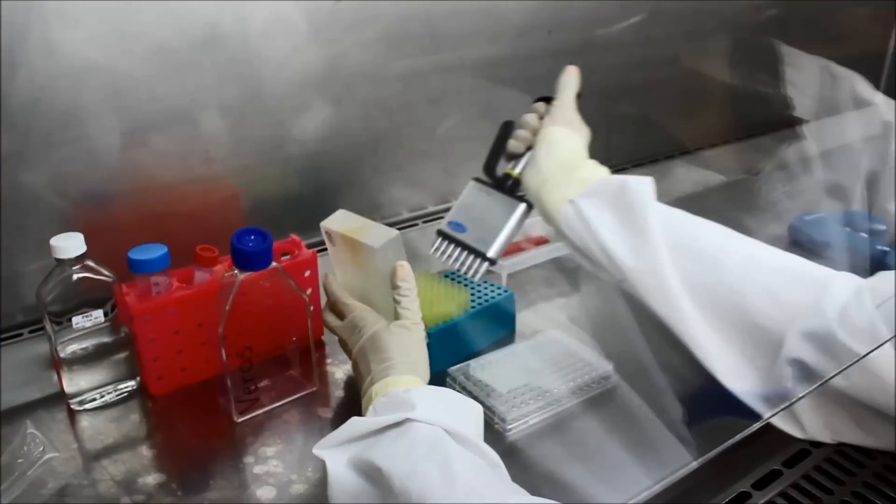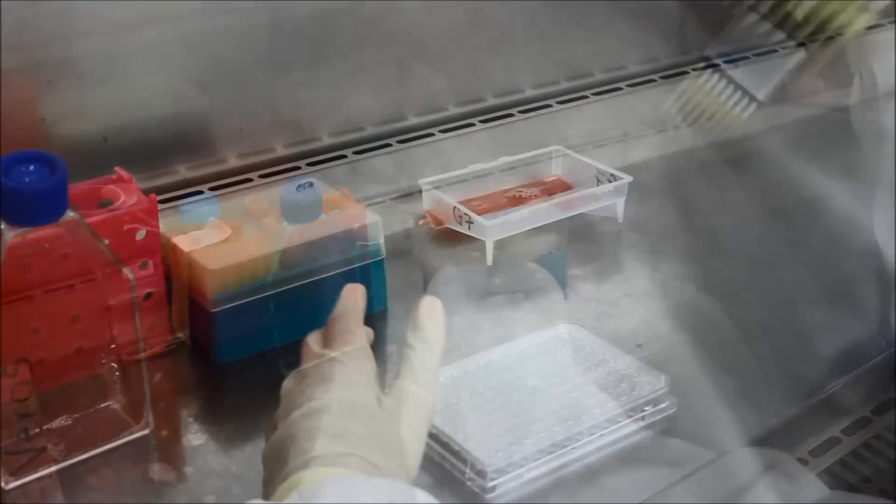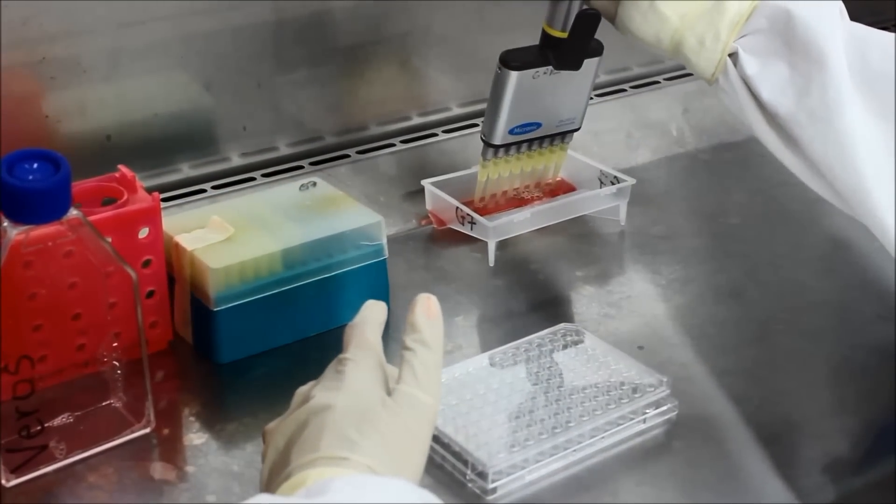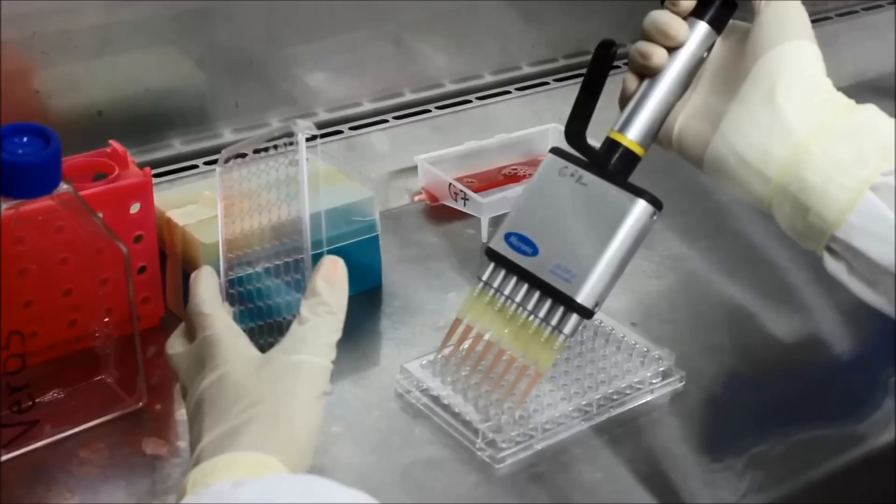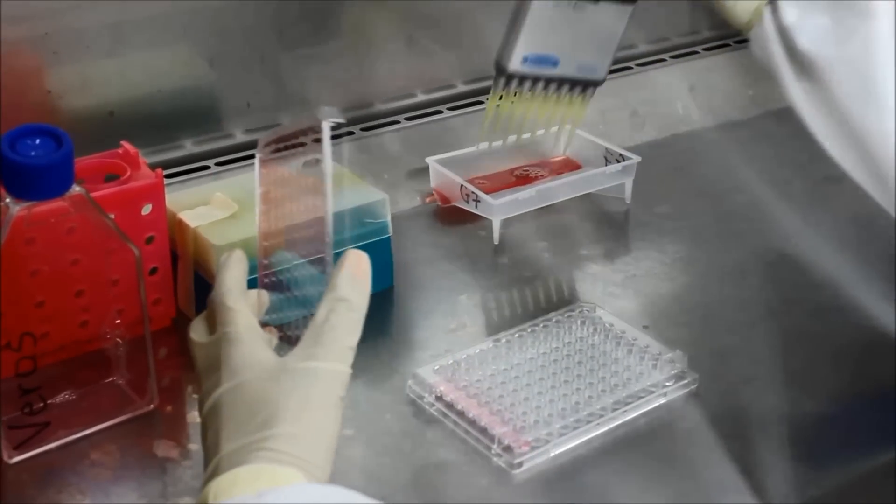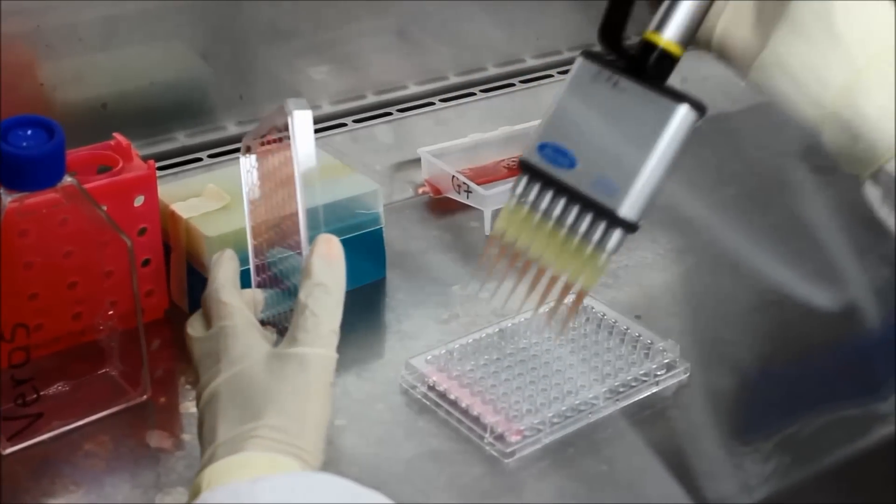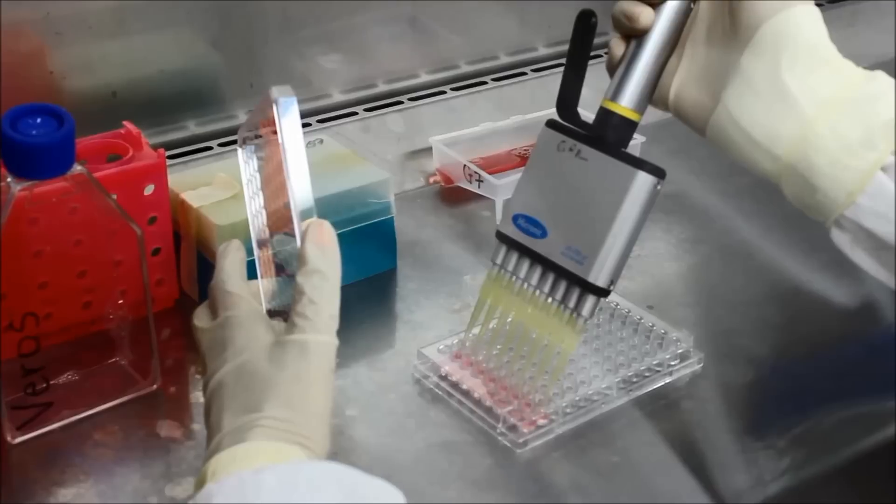Set your multi-channel to 100 µL and add cells to your tray column by column. Make sure to pipette up and down to keep breaking up cell clumps when necessary. You do not need to change tips between columns.